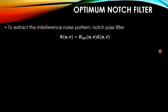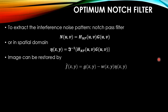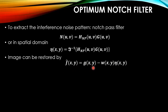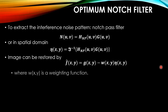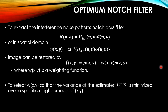The noise in the frequency domain is N(u,v) = H_NP(u,v) · G(u,v), and in the spatial domain it is η(x,y). The image can be restored by: f̂(x,y) = g(x,y) − w(x,y) · η(x,y), where w(x,y) is a weighting function selected so that the variance of the estimate f̂(x,y) is minimized over a specific neighborhood of (x,y).